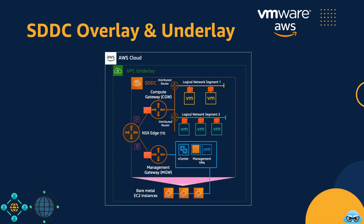In this comprehensive network architecture diagram, we bring together all the key concepts we've discussed. This all-encompassing diagram visually illustrates how these components work together harmoniously, optimizing network functionality, security, and data flow within VMware Cloud on AWS.